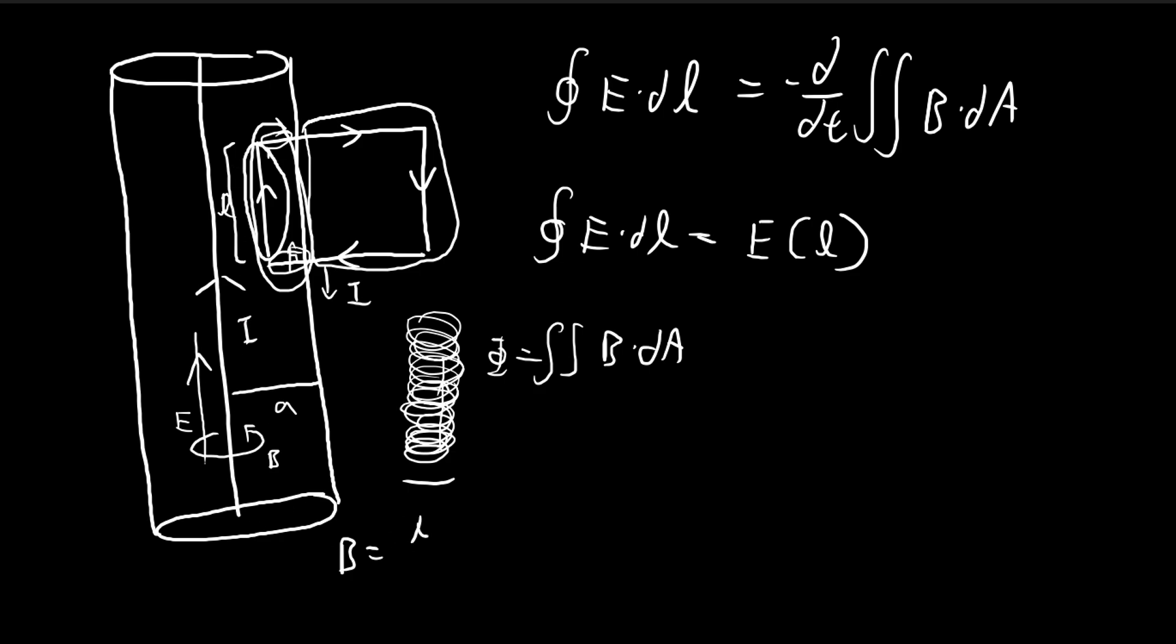Recall, the magnetic field caused by this kind of wire is given by mu i divided by 2 pi r. So r is the distance from the wire. You can derive this pretty easily with Ampere's law, so I'm not going to repeat that. And then we're going to integrate along this entire surface. In our case, dA is going to point inwards into the page, as dictated by the right-hand rule, since we're taking the line integral in this direction.